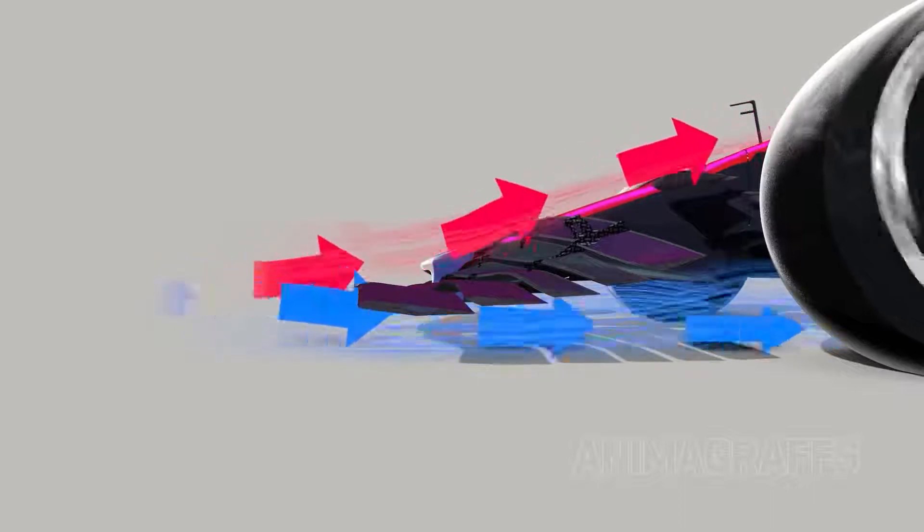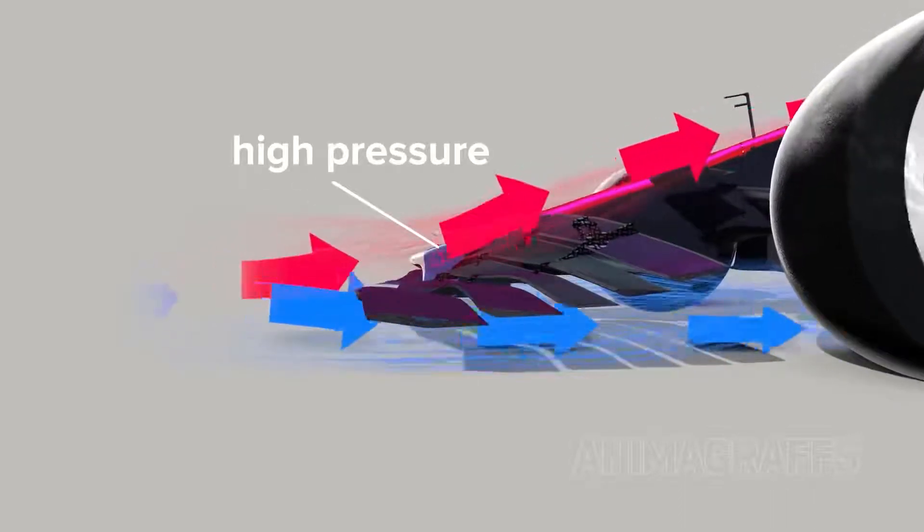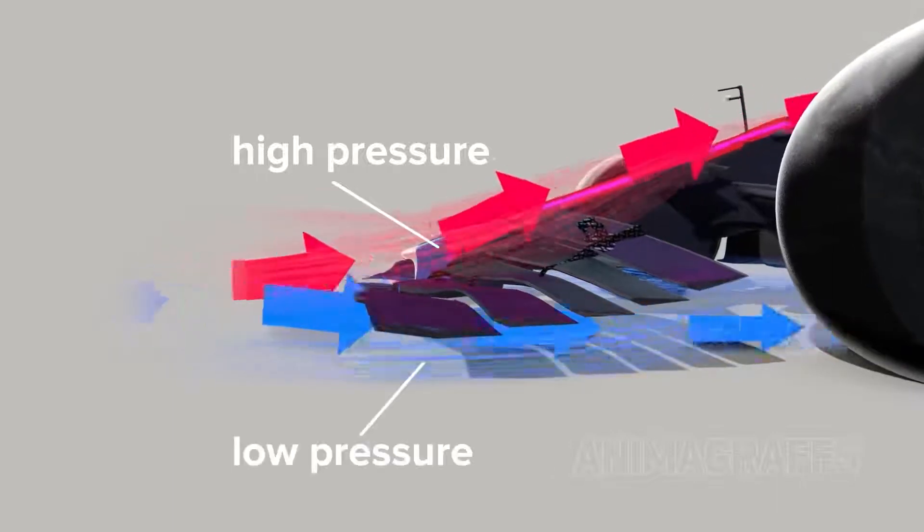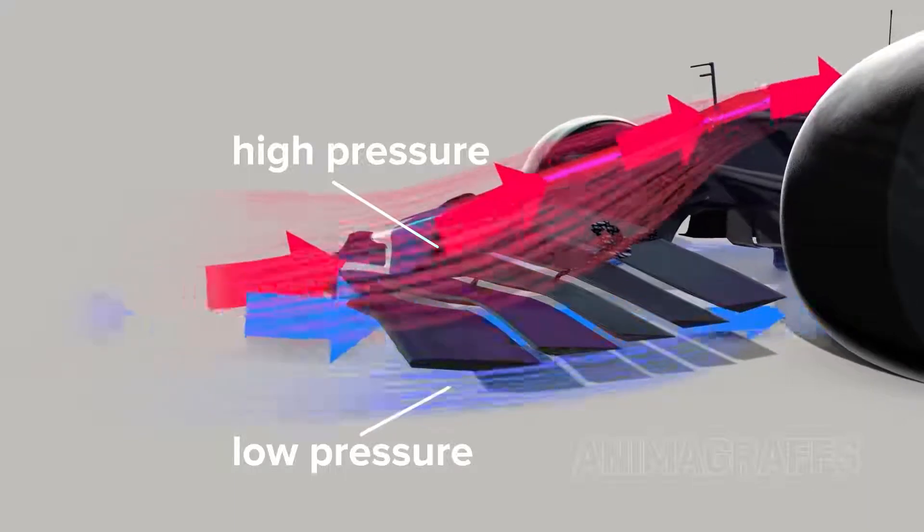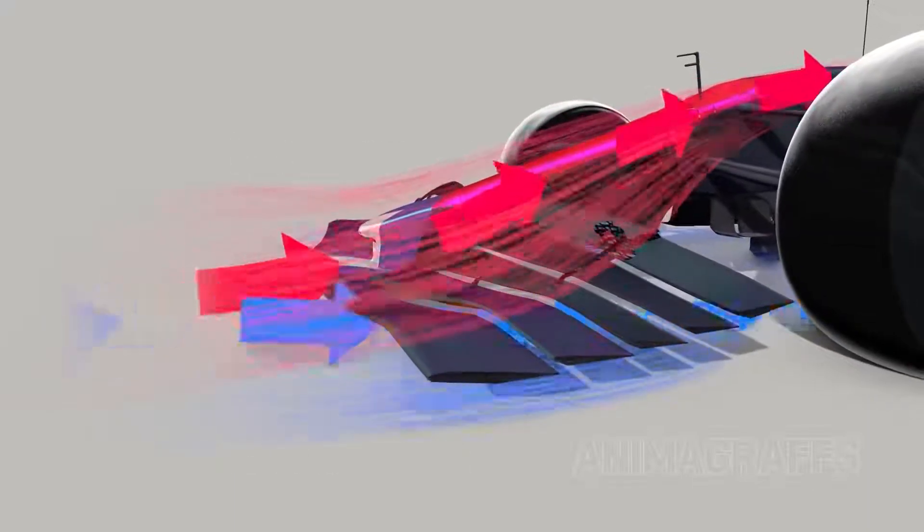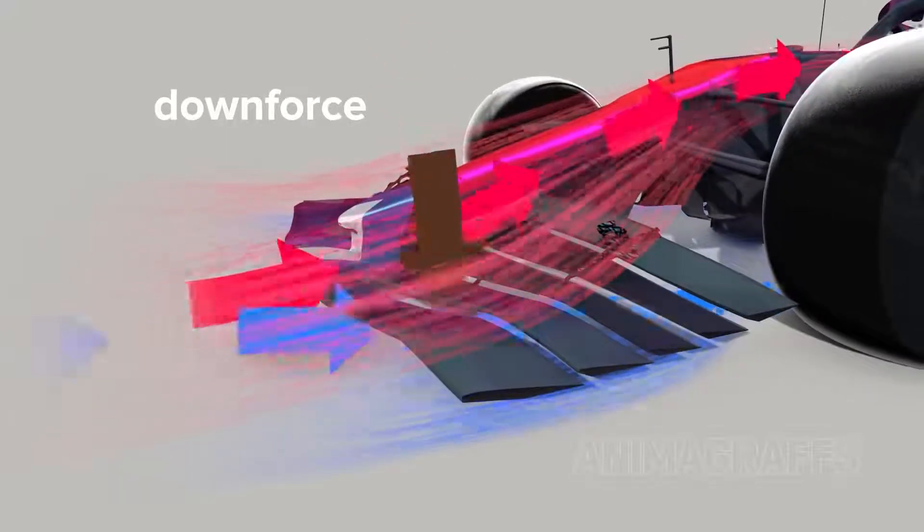The front wing curves upward, forcing air to move around it in such a way that a high-pressure area forms above the wing with lower pressure beneath. This pressure difference contributes to a kind of suction force, called downforce, that pushes or sticks the car to the track.